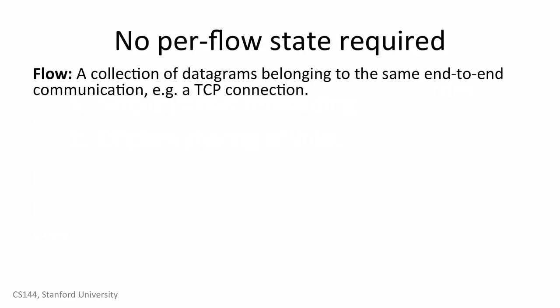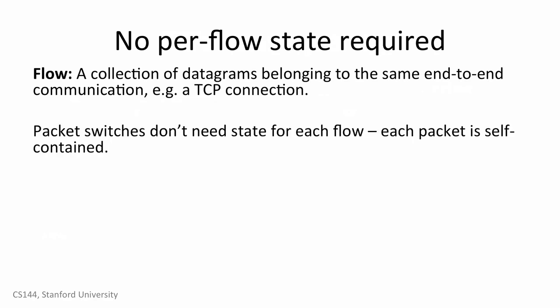When we communicate, we don't usually send only one packet — we send many. For example, a voice call consists of many consecutive packets, all part of the same communication. We call this sequence of packets a flow — more specifically, a flow is a collection of datagrams belonging to the same end-to-end communication, for example, a TCP connection. Because each packet is self-contained, a switch doesn't need to know about groups of packets or flows. Treating each packet independently means the switch can be much simpler to build, manage, and troubleshoot.